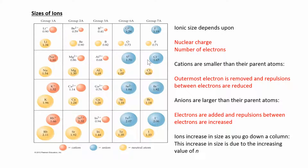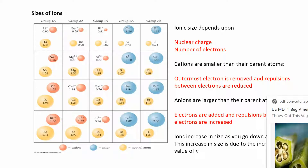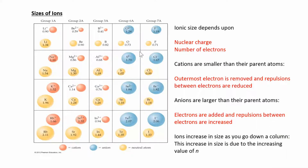Let's look at what happens when we have ions. Remember, ions involve gaining or losing electrons, which is going to change the size. First, just focus on the yellow spheres here — those are the parent atoms, which are neutral. We already looked at the trend going down a group: lithium, sodium, potassium — as you go down, it's getting bigger and bigger because you're gaining a whole other row of electrons.